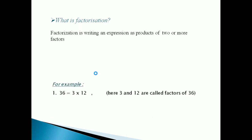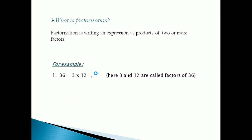For example अगर मैं आपको बोलूँ 36 को factorize करना है, तो आप उसको 3×12 लिख सकते हो, 1×36 भी, 2×18 भी, 4×9 भी। इन सभी cases में आपने 36 को factorize किया है। Factorization का definition है: writing an expression as products — यानी multiplication के format में। तो 36 को 3×12 के terms में लिख दिया, तो उसका factorization हो चुका है।